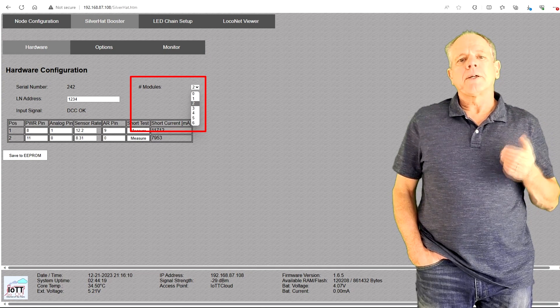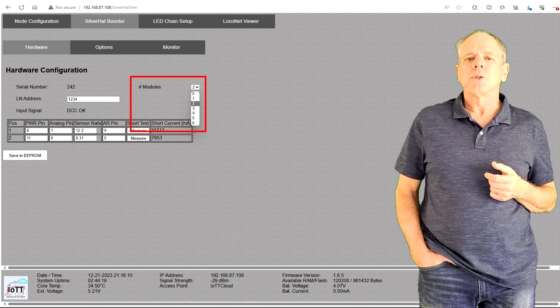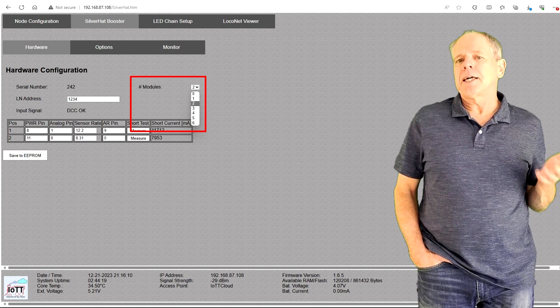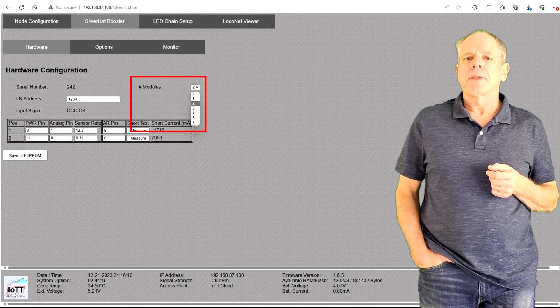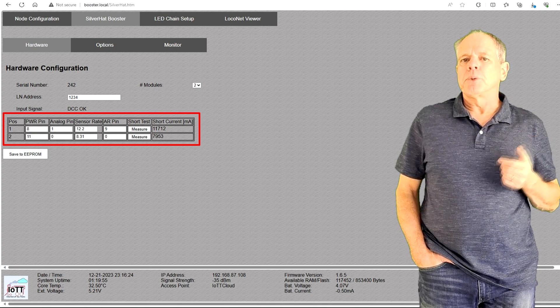Open the hardware configuration tab and start by selecting the number of booster modules you have in the stack. In my case, as we have seen, it is two. The screen will then display a configuration line for each booster.